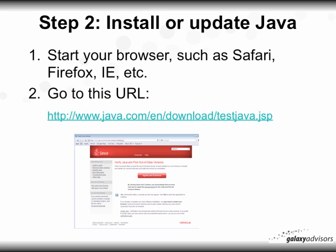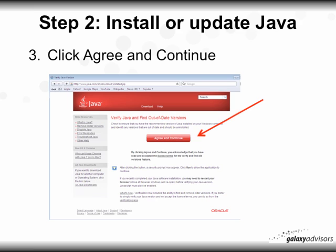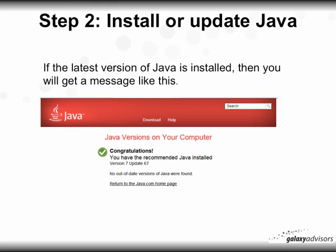To install or update Java, start your browser — such as Safari, Firefox, or Internet Explorer — and go to the Java URL listed in the Show More section below the YouTube video. You'll get a window that says 'Verify Java and find out-of-date versions.' Click Agree and Continue. If the latest version of Java is installed, you'll see a congratulations message showing your current version, such as version 7 update 67. If not, click Go to proceed with installation.